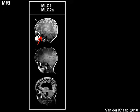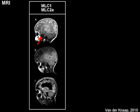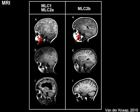In classical MLC patients, the MRI phenotype becomes worse as patients become older. In contrast, in type MLC2b it is the other way around — the MRI phenotype improves as patients become older.